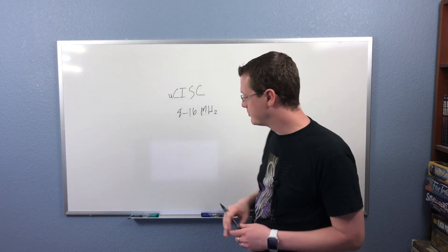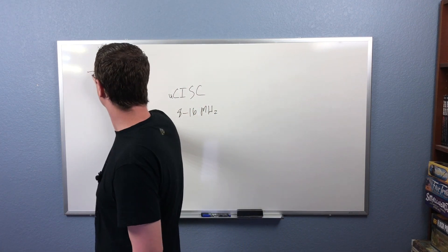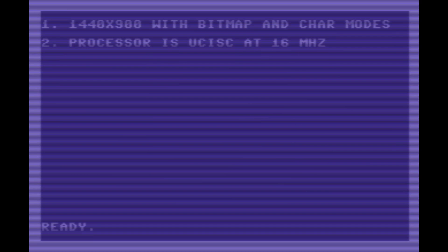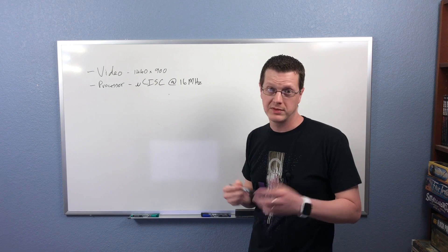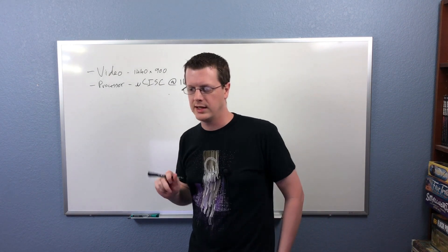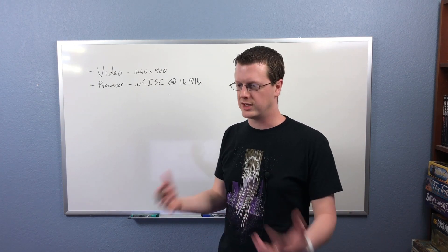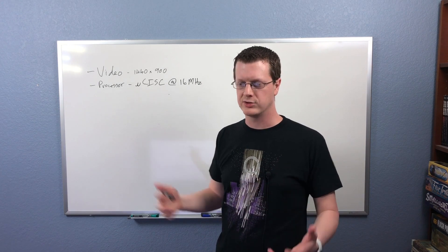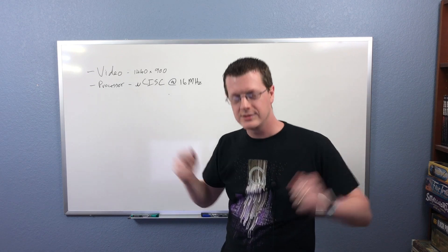We're going to use the MUSE-CISK architecture and build an FPGA equivalent for it, so it'll be real hardware executing instructions. We'll output to VGA and be able to plug in a real monitor. We're aiming for 8 to 16 megahertz. One of my next videos — probably the next one — is going to be an introduction to MUSE-CISK, where I'll teach you how to program in it. It only has two instructions, so it's really simple.